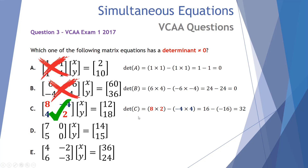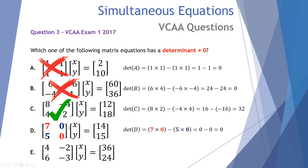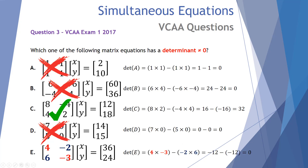We'll continue to verify the remaining options. Option D: 7×0 − 5×0 = 0. Determinant of zero — no unique solution. Option E: 4×(−3) − 6×(−2) = −12 + 12 = 0. Determinant of zero — no unique solution. Confirmed: the correct answer is option C.